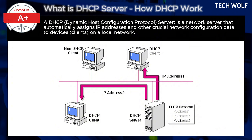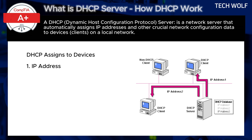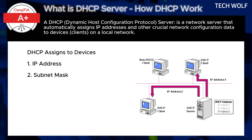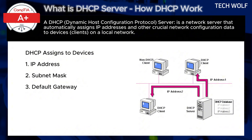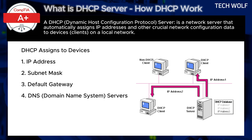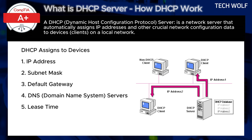Here is what data is being assigned by DHCP. The DHCP server assigns several key pieces of information to devices: an IP address, a unique identifier for the device within the local network; a subnet mask, which defines the range of IP addresses within the network; a default gateway, the IP address that allows communication outside the local network, usually the router; DNS servers, which resolve domain names to IP addresses for internet browsing; and lease time, the duration for which the IP address is assigned to the device.